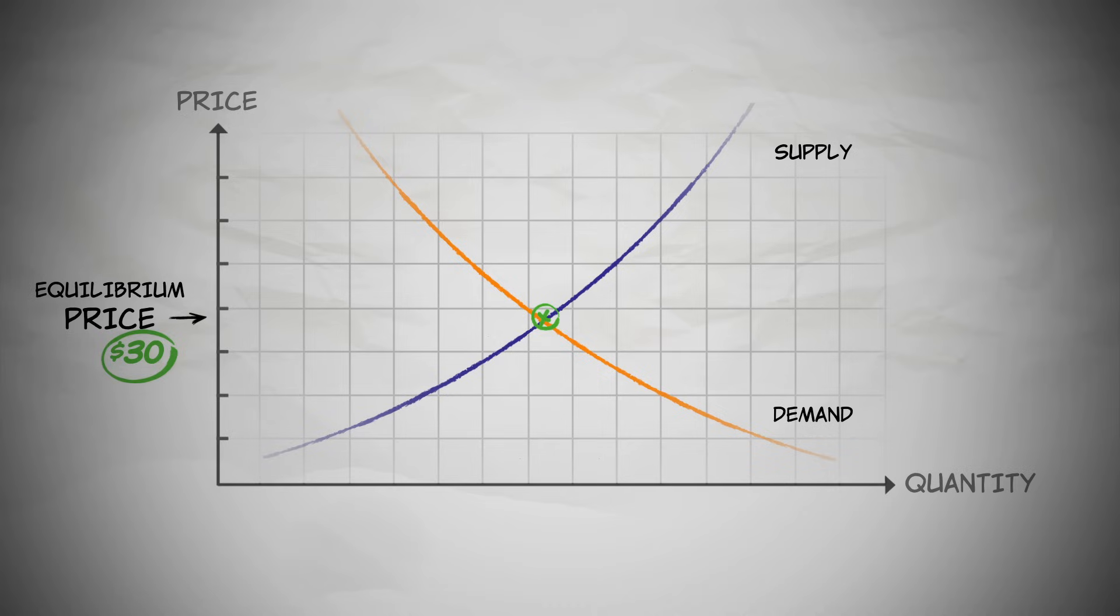Now, let's say the price is less than the equilibrium price. Say, $15 a barrel. At $15 a barrel, the quantity demanded exceeds the quantity supplied. A shortage. And what happens now?